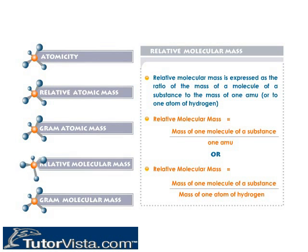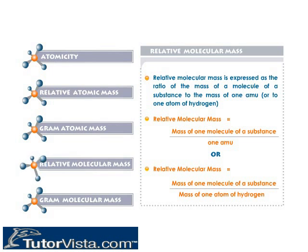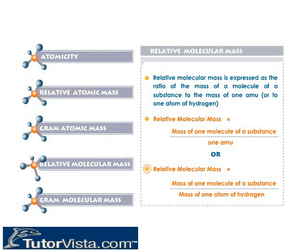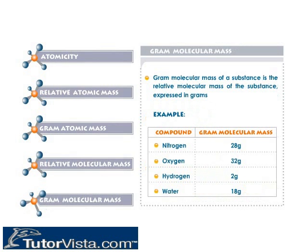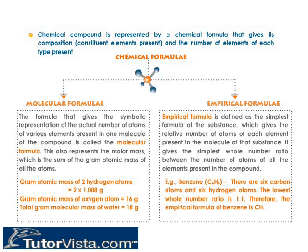Relative molecular mass is expressed as the ratio of the mass of a molecule of a substance to the mass of one AMU, or to one atom of hydrogen. Relative molecular mass equals the mass of one molecule of a substance divided by one AMU, or by the mass of one atom of hydrogen. Gram molecular mass of a substance is the relative molecular mass expressed in grams.